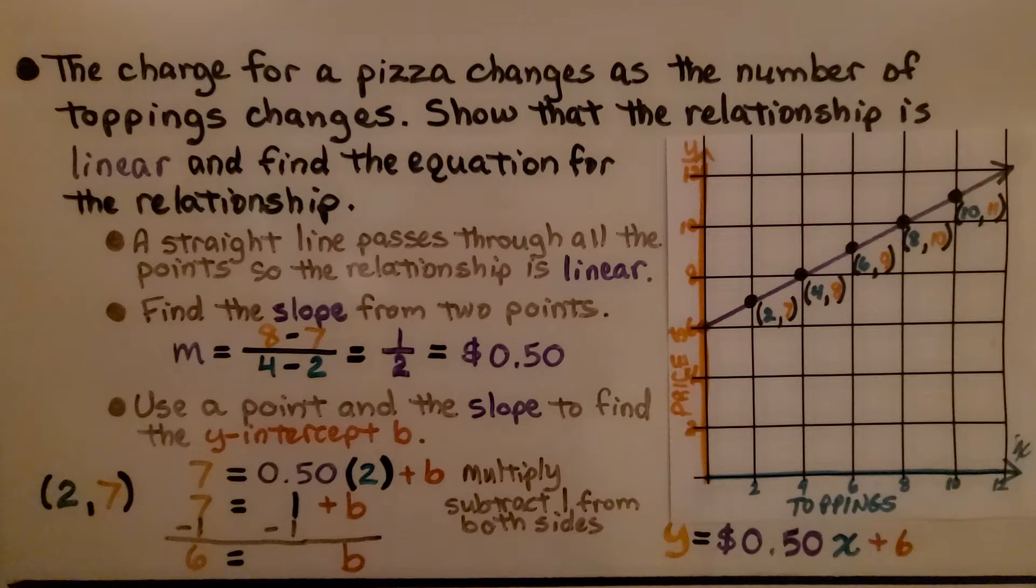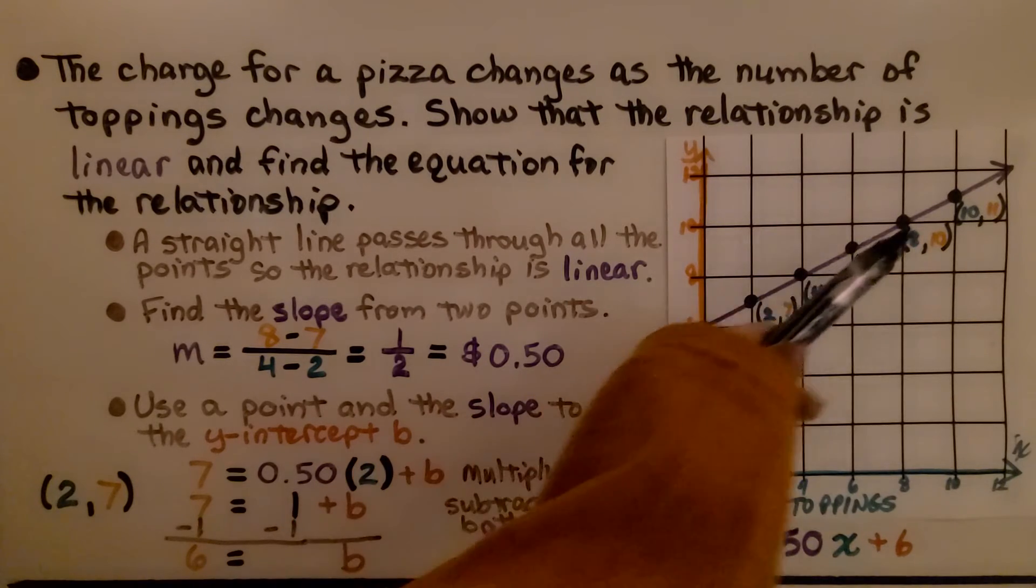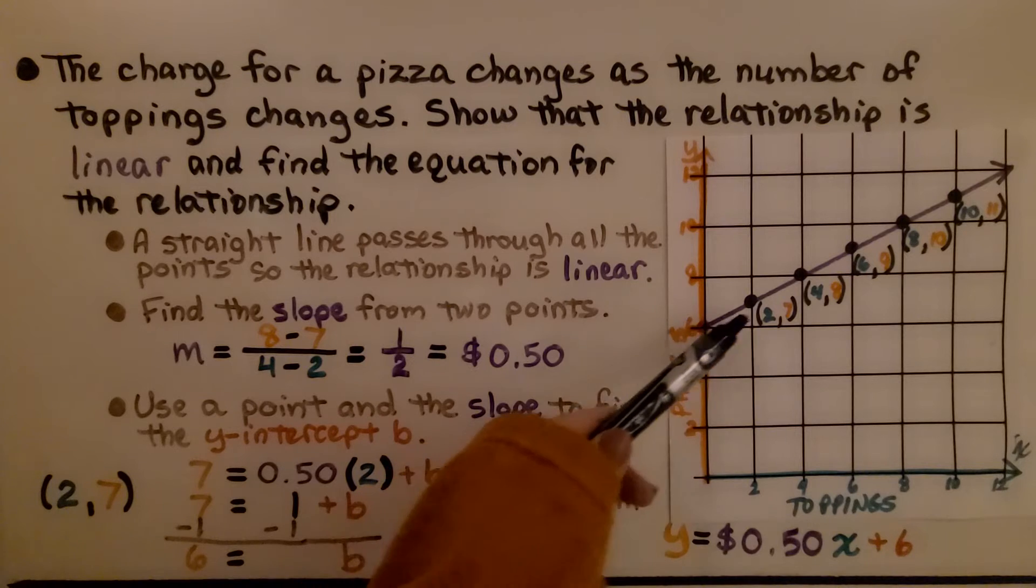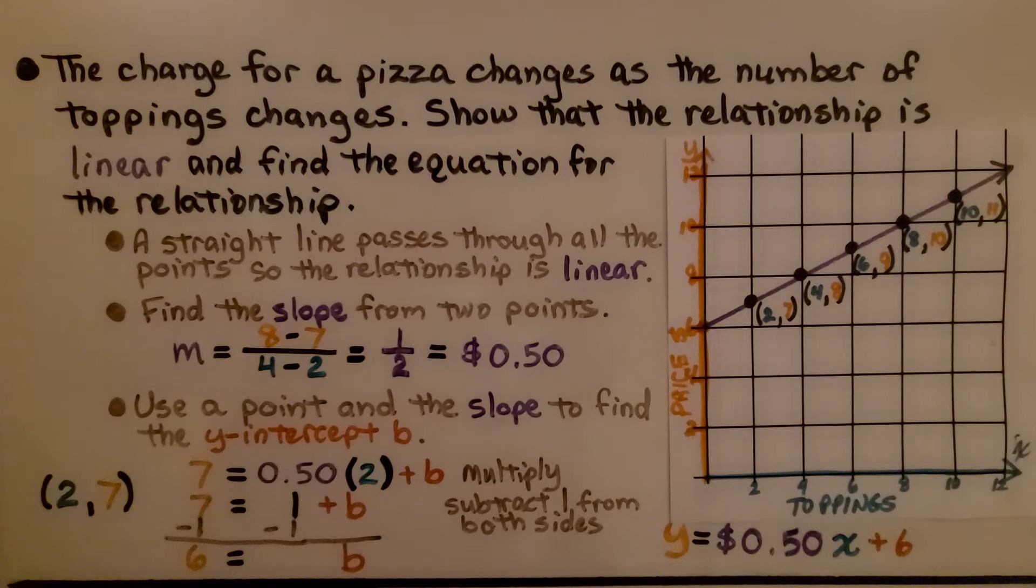Here's our first problem. The charge for a pizza changes as the number of toppings changes. Show that the relationship is linear and find the equation for the relationship. The first thing we do is see that a straight line passes through all the points. So the relationship is linear.